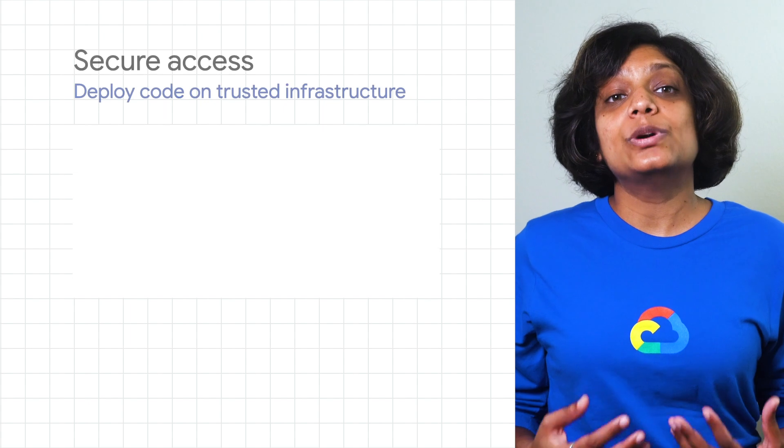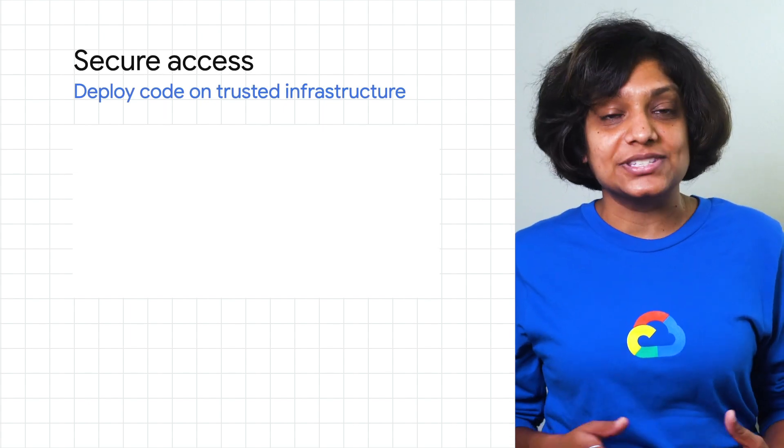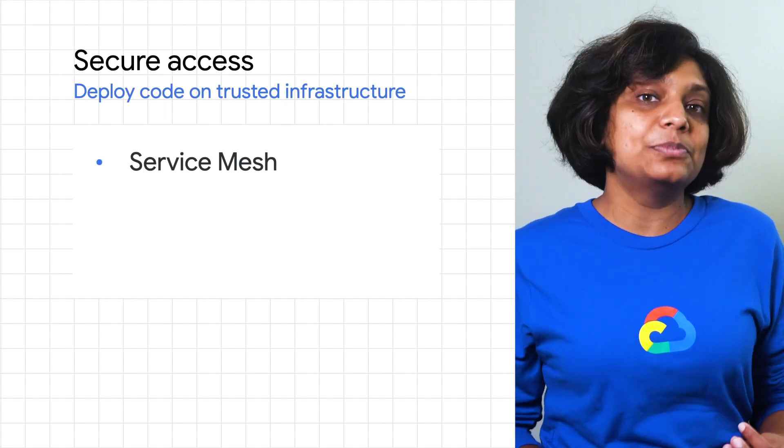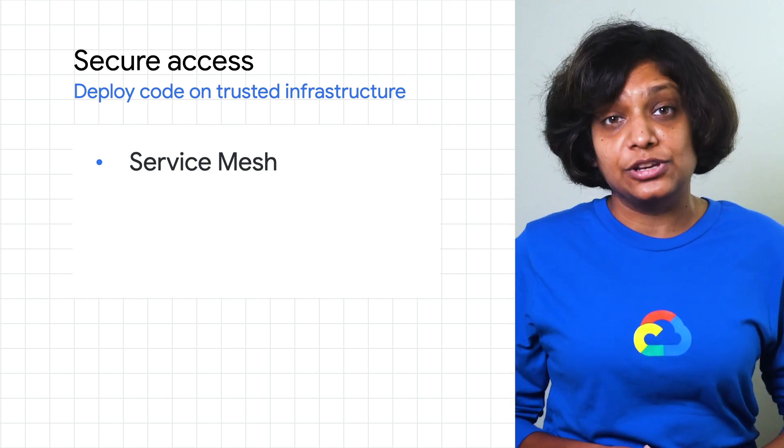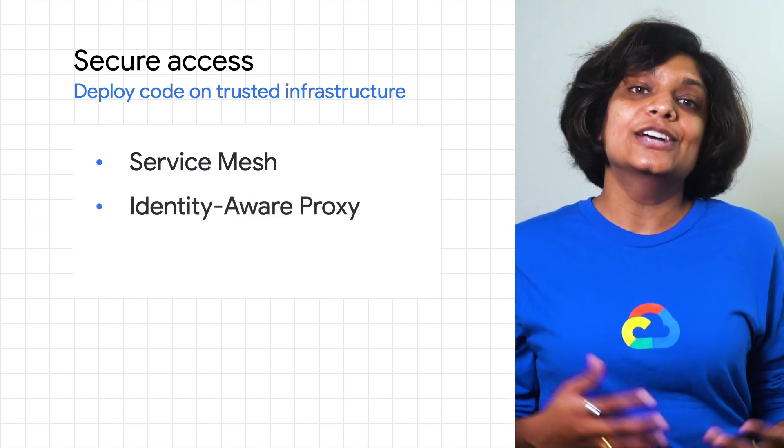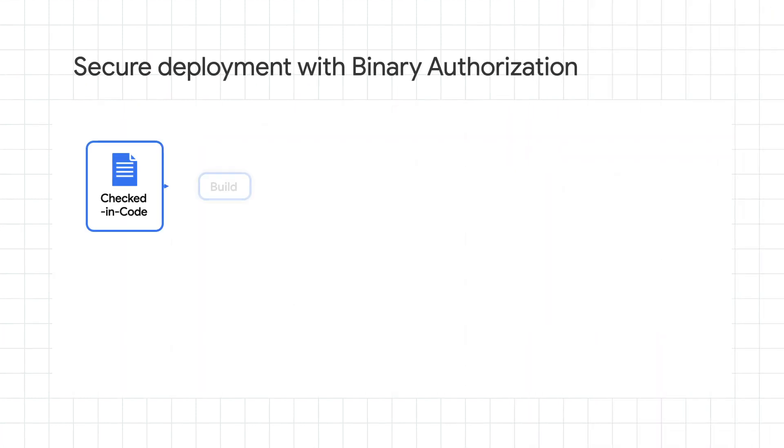It is also essential to secure access. This helps you protect against unauthorized access using stolen credentials, compromised code in your deployments through privileged escalations or unpatched vulnerabilities, malicious insiders with access to internal endpoints, and any underlying network compromises. Anthos helps you implement these controls using a combination of features, such as Anthos Service Mesh to implement authentication, authorization, and encryption between your services, and IEP to implement granular access controls.